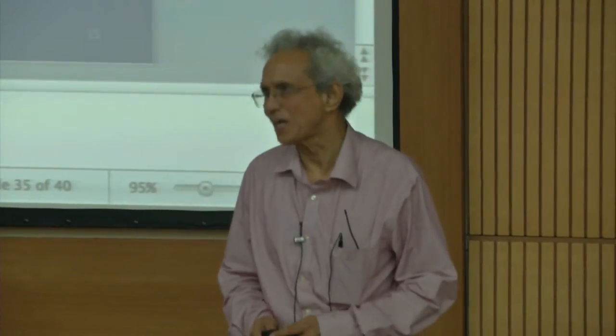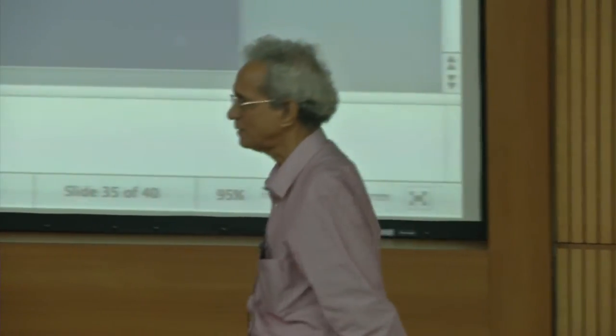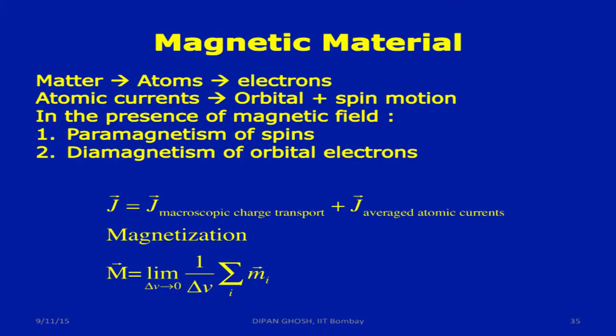Conductors, we have free charges. In insulators or dielectrics, the charges are bound. The negative charge centers are bound to the positive charge centers. But on the other hand, there can be certain amount of separation between these two charge centers, so that a small sample can have a dipole moment even though it doesn't have a charge.